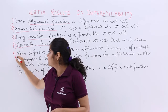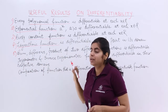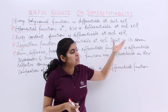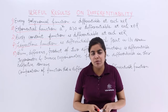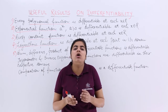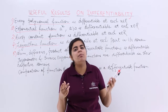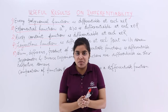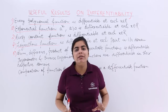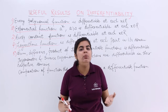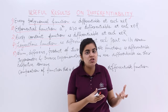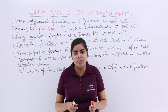After these four, we have the fifth point, which is about the algebra of differentiable functions — some difference and product. The sum, difference, or product of two differentiable functions is also differentiable. For example, if you multiply a constant function with another constant function, you again get a constant function, which is differentiable because each one individually was differentiable. Similarly, the sum of two polynomial functions — each differentiable — gives a result that is also differentiable.